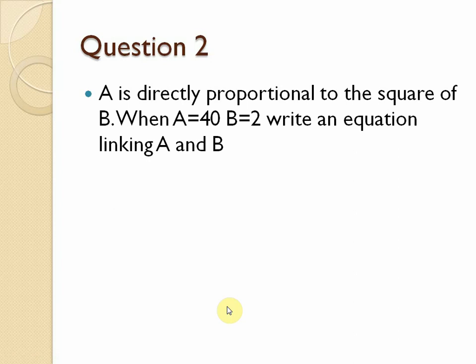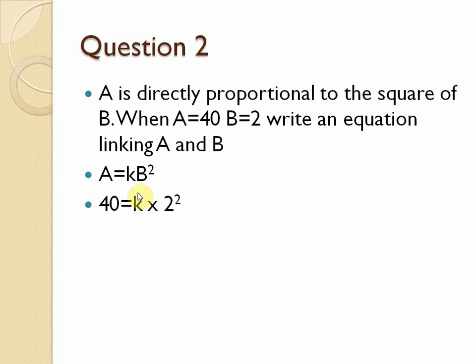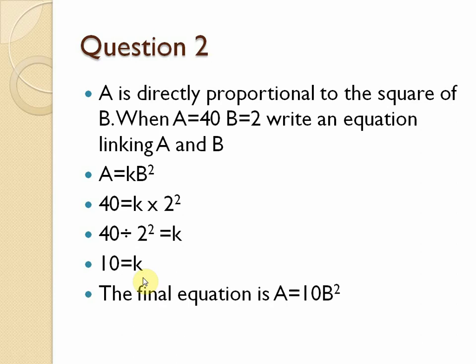Classwork question two: a is directly proportional to the square of b. The equation is a = kb². Given a = 40 and b = 2: substitute to get 40 = k × 2², which is 40 = k × 4, so k = 40 ÷ 4 = 10. The final equation is a = 10b².